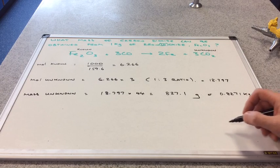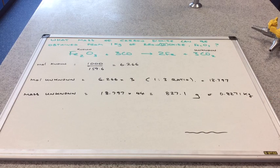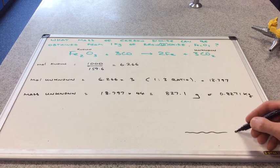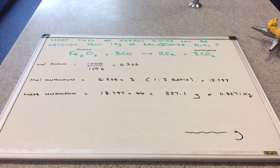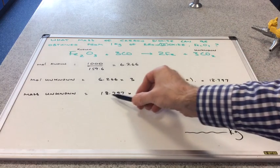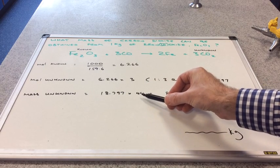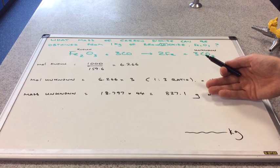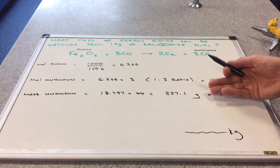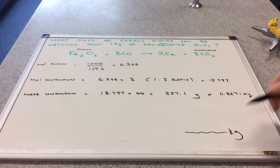A tip: in a question, the units will sometimes be shown next to the answer space. If grams are shown, give your answer in grams; if kilograms, convert accordingly. Remember, when you multiply moles by an MR — which is in grams — your answer is in grams, so an extra conversion may be needed to match the units the examiner wants.